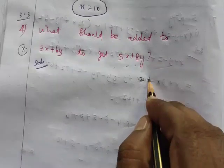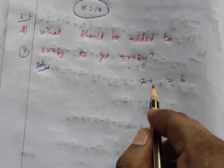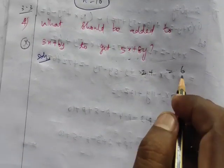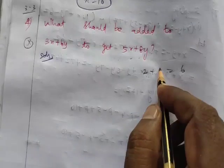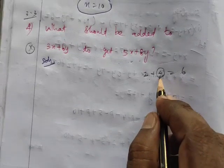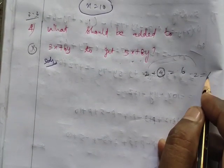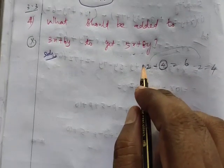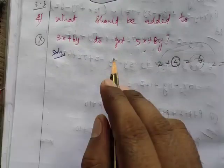Let me explain with a simple example. What should be added to 2 to get 6? The answer is 4. Two plus four equals six. So to find what to add, we subtract: six minus two equals four. The answer is obtained by subtracting. This same concept applies here.